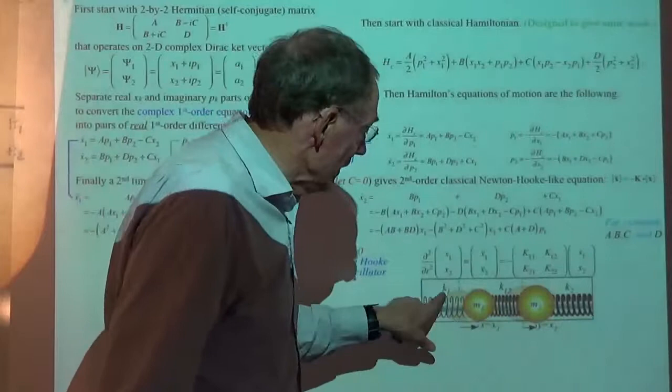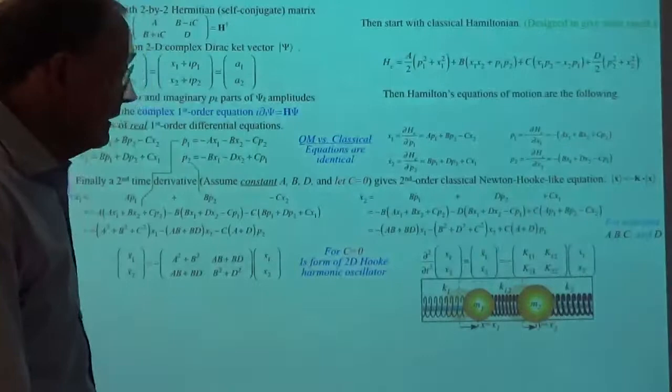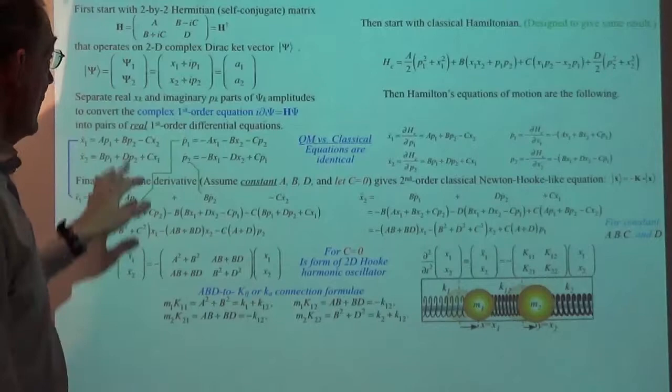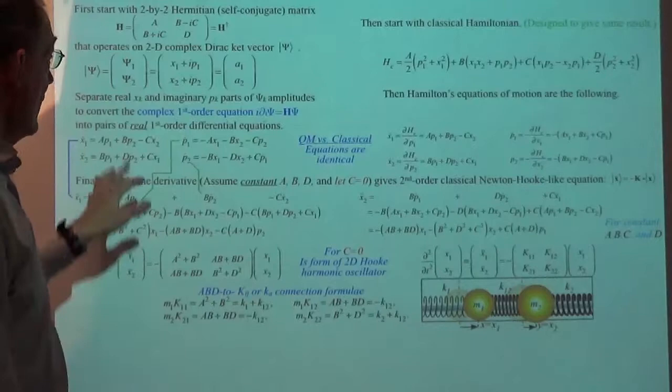So that's the breakdown of this Hamiltonian into four things including the identity. Why did we change the names? Mnemonics — mnemonics are really useful. Sigma A is involved in the parameters A and D, and the naming reflects that.